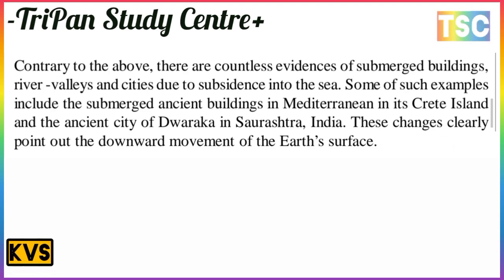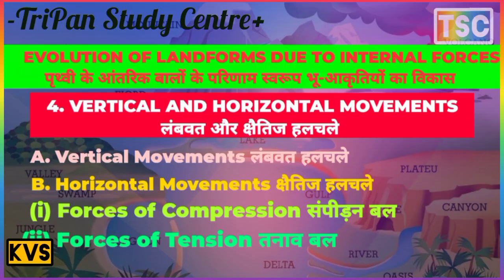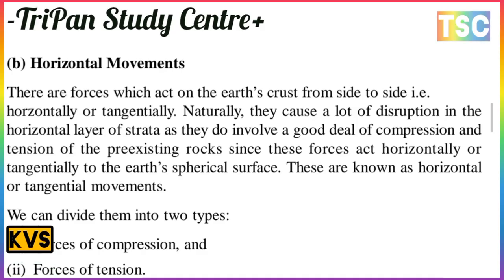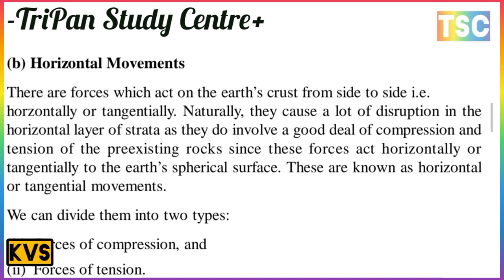Horizontal movements are forces which act on the earth's crust from side to side. There is a lot of distortion in the horizontal layers of strata, as they involve a good deal of compression and tension of the rock strata. These forces act horizontally or tangentially to the earth's spherical surface and are known as horizontal and tangential movements. They can be divided into two types: the force of compression and the force of tension.